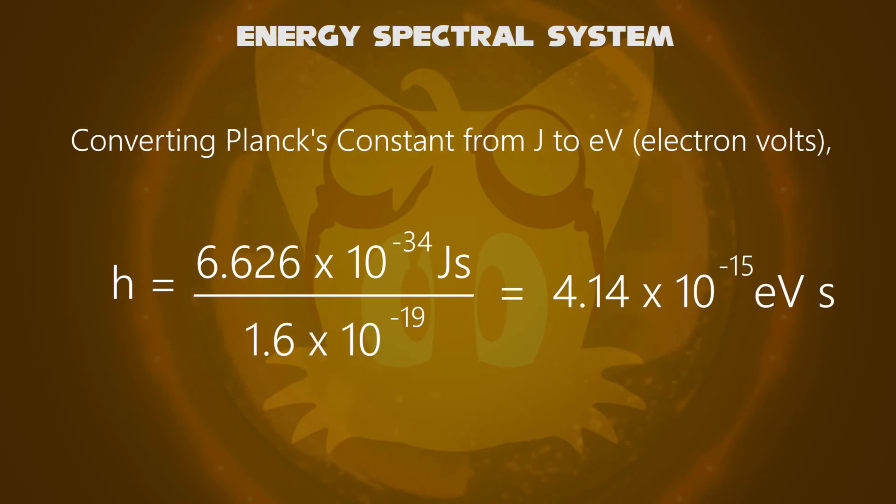We get 4.14 times 10 to the negative 15 electron volt seconds.